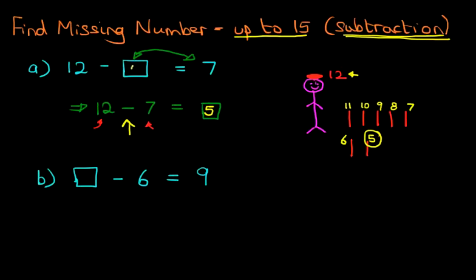Now write this in the original question. We've got 12 minus 5 equals 7. That is the missing number. It really is that simple. The hardest part, actually it's not the hard part, it's just understanding it is to reorder the question.